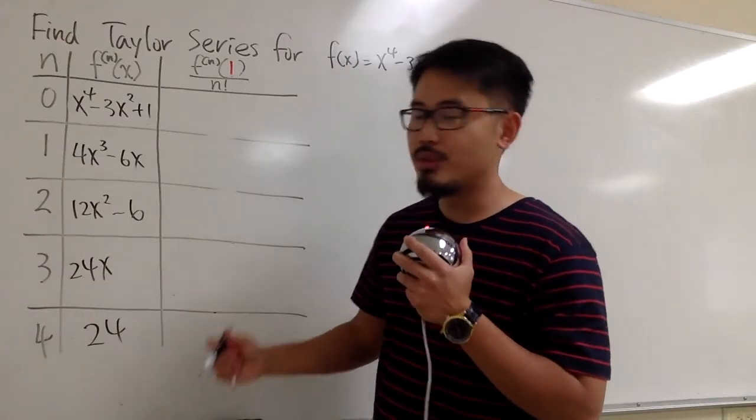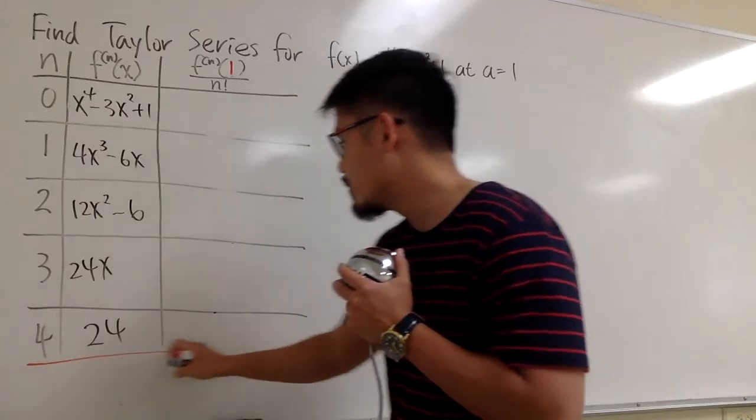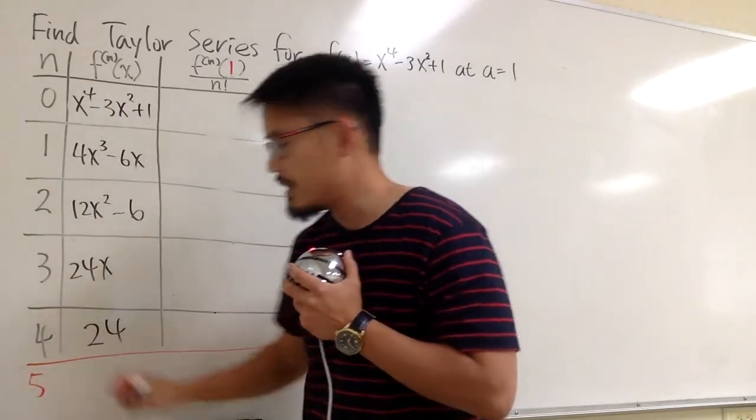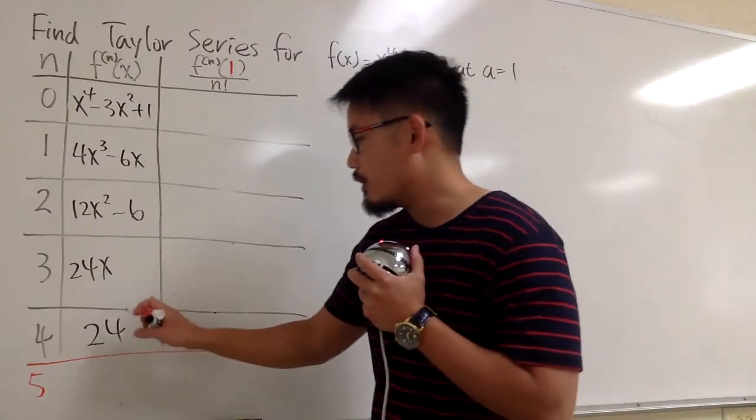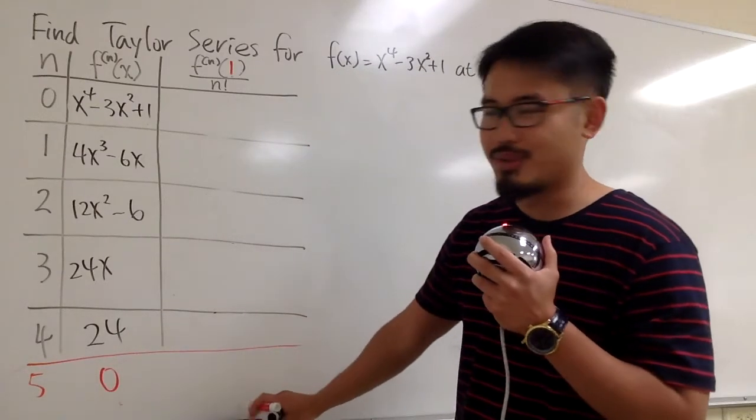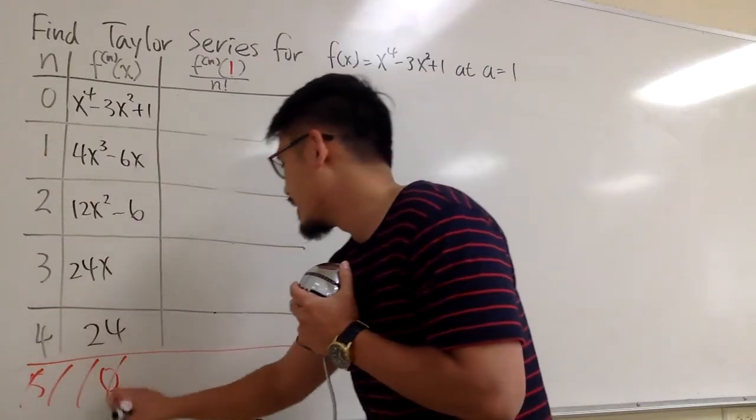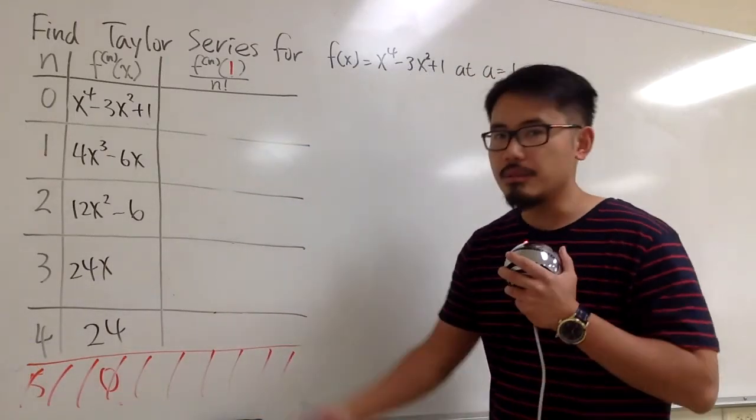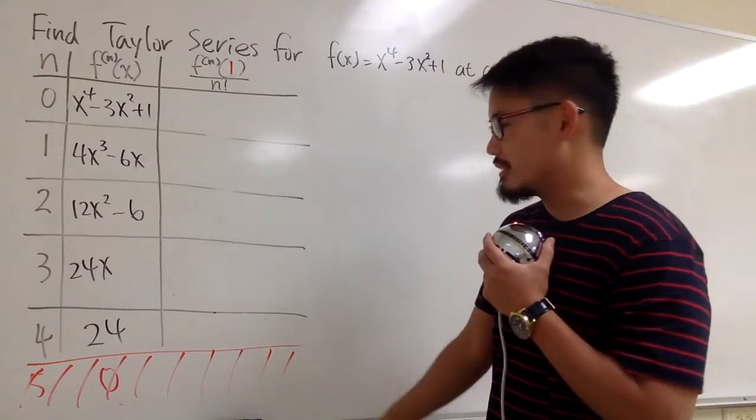And shall we keep going? Sure, if you would like. If you want to go one more time, when n is equal to 5, the derivative of 24 will be 0, and the rest will be just 0. So technically, we can end right here, because anything will be 0 at this anyways.